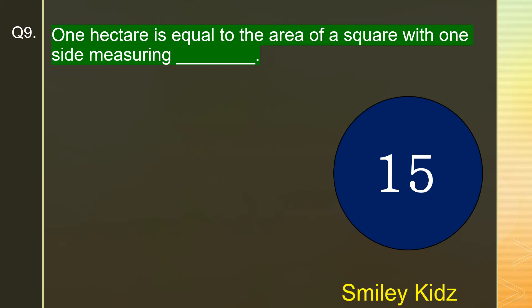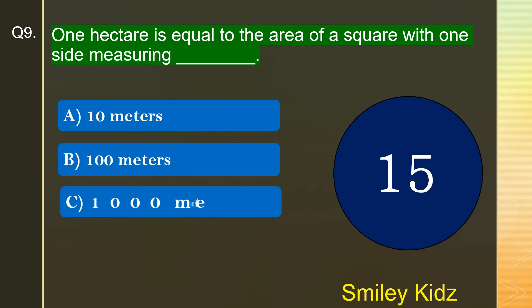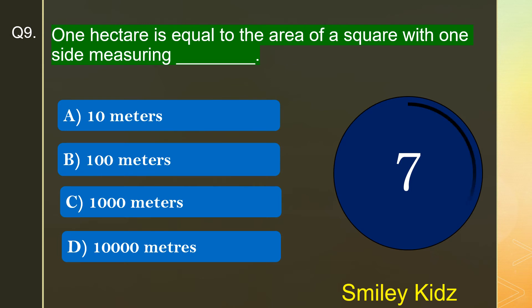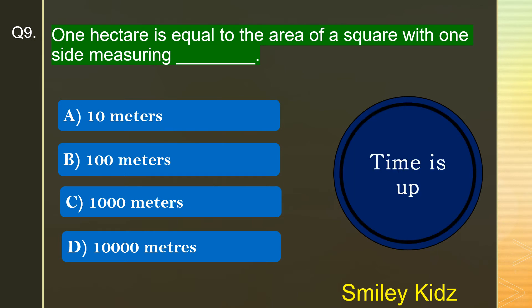Question number 9. One hectare is equal to the area of a square with one side measuring dash. The options are A. 10 meters, B. 100 meters, C. 1,000 meters, or D. 10,000 meters. Your time starts now. Your time is up and the right answer is option B. 100 meters. One hectare is equal to the area of a square with one side measuring 100 meters.